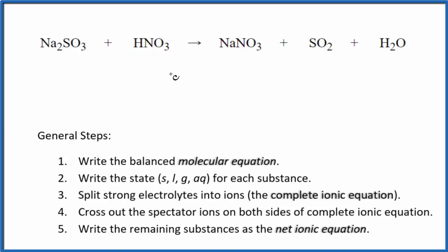The first thing we need to do with net ionic equations is balance the molecular equation. I can see that there's one sodium here and two here, so I'm going to put a two in front of the sodium nitrate. Now I have two sodiums, but I also have two nitrates. Let's put a two here, that'll balance the nitrates. That balances the hydrogens and everything else, so this is our balanced molecular equation.